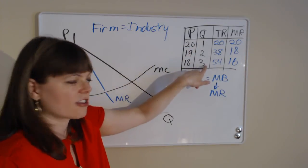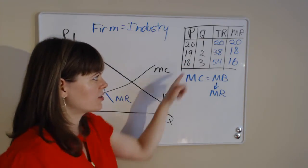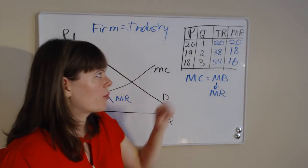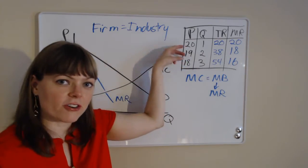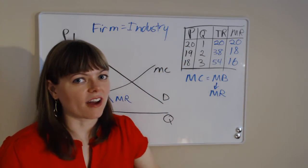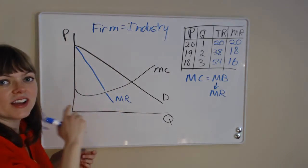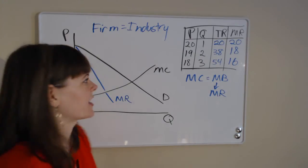And the same principle applies. If we want to sell that third cupcake, we have to lower the price to $18. So we get the $18 extra from selling that third cupcake, but we also have to reduce the price of the first two people's cupcakes by a dollar. So we lose a couple more dollars. And that's why the marginal revenue curve shoots off the demand curve like it does.